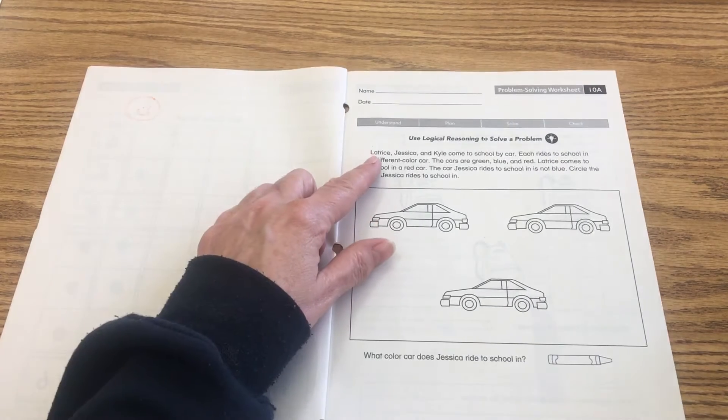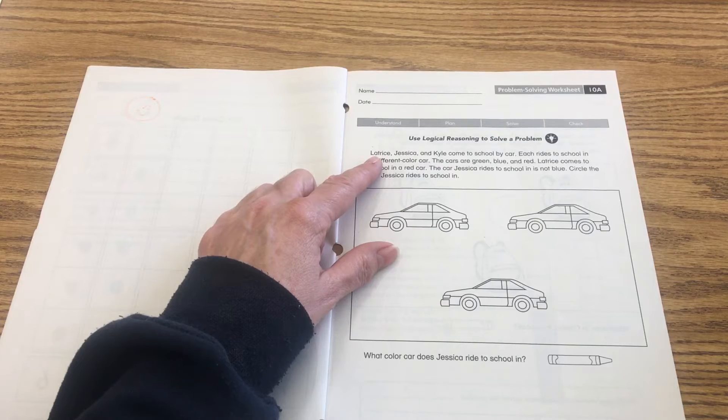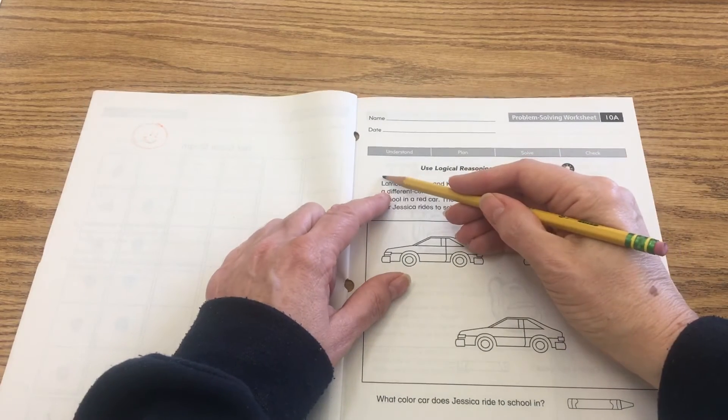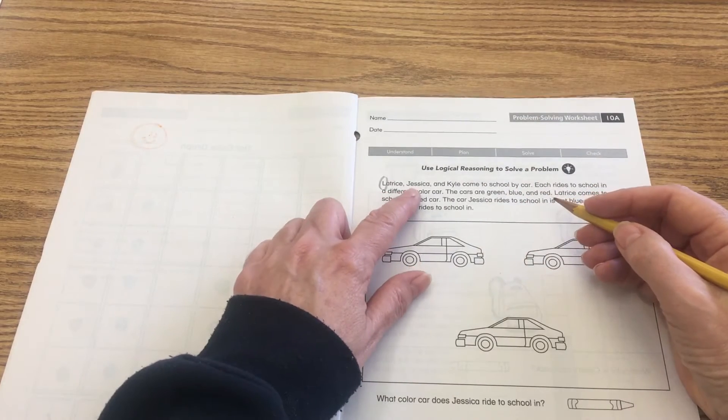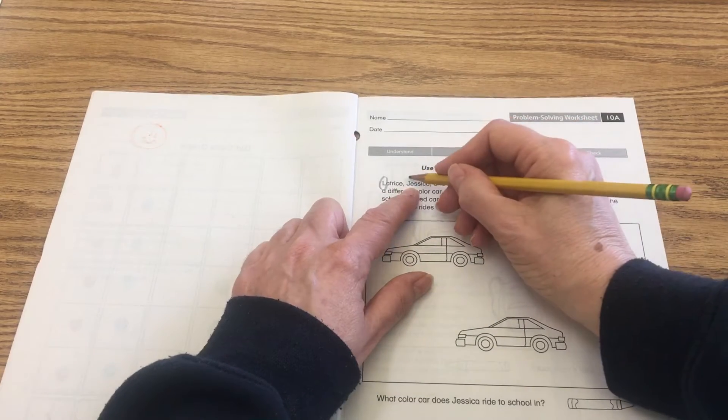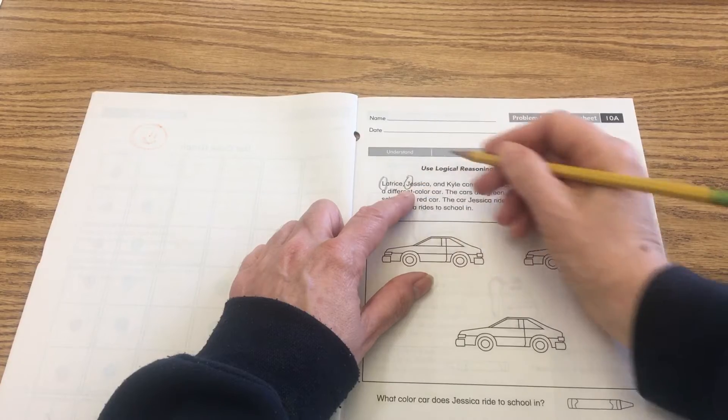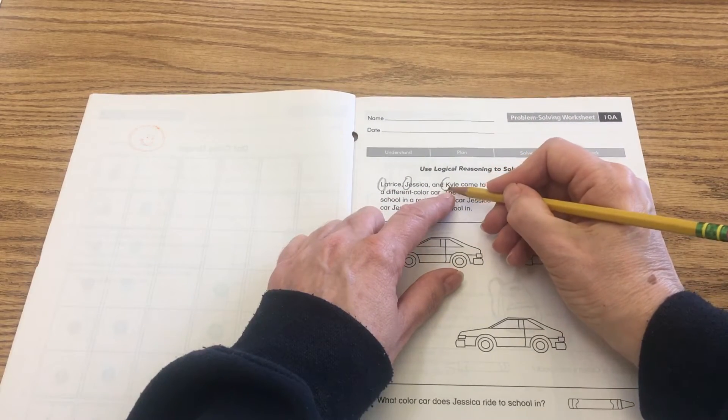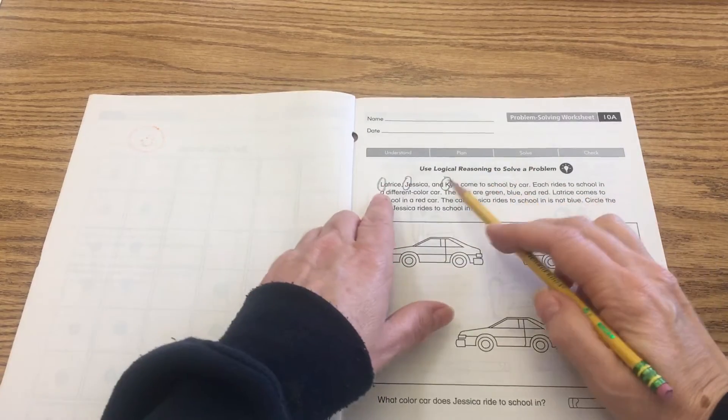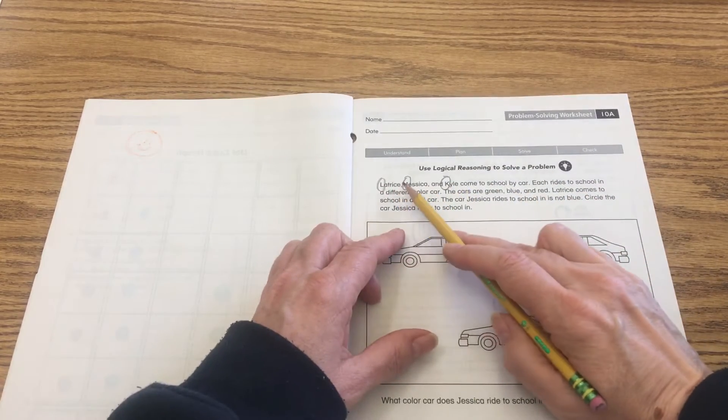It says Latrice, and I want you to circle the L on Latrice, the capital L. Jessica, that's the second name here, so I want you to circle the J. And Kyle, circle that capital K there in his name. So do you see where I circled those? One, two, and three.